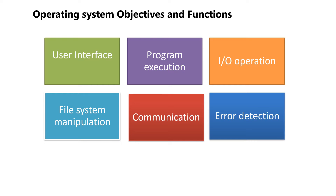Next is program execution. The system must be able to load a program into memory to run the program. The program must be able to end its execution either normally or abnormally. Then I/O operation — a program while execution requires I/O, which includes a file or I/O device.